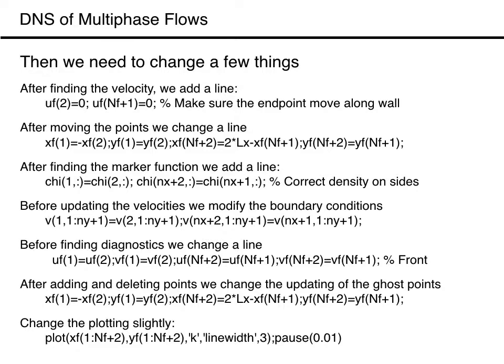We add a line putting the horizontal velocities of the first and last front points to 0 to ensure they do not drift outside the domain. After finding the velocity of the front points, we modify the line setting the values of the ghost points. On the side walls, we add a line to set the density at the ghost points equal to the density of the next interior point since the interface moves. We change the line where ghost velocities on the vertical walls are specified to impose full-slip walls, modify the line setting ghost velocities for the front, and modify the line setting the location of the front ghost points after adding and deleting points. Finally, we modify the plotting slightly to plot the whole front.